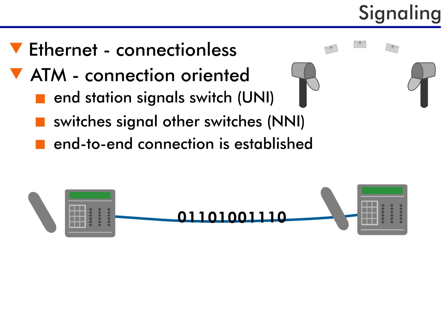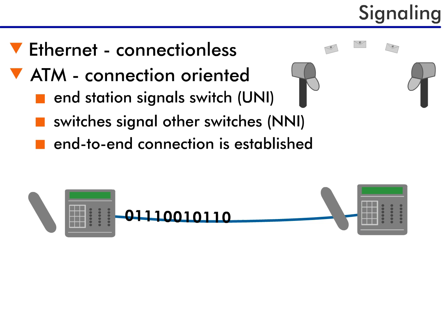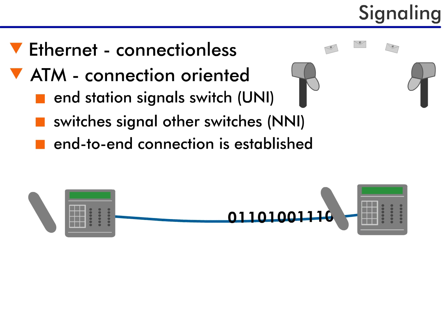As I mentioned, signaling is used between ATM devices, but we did not talk about why. Ethernet doesn't use signaling, so why is signaling required with ATM?